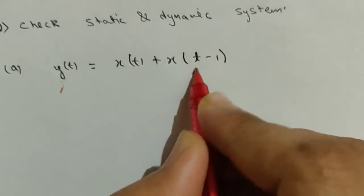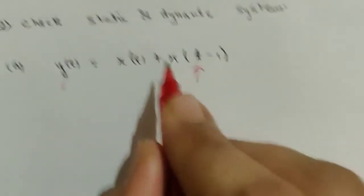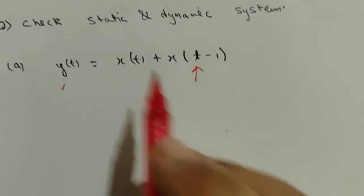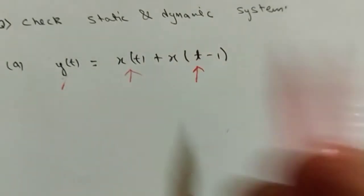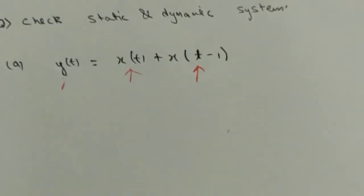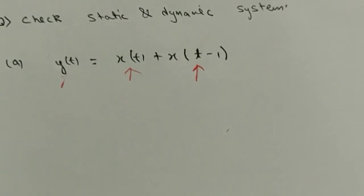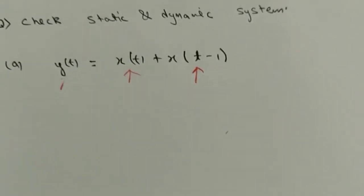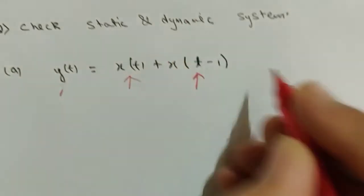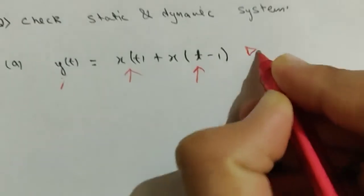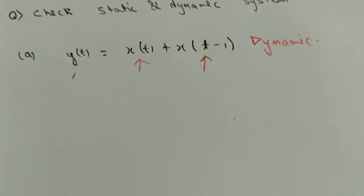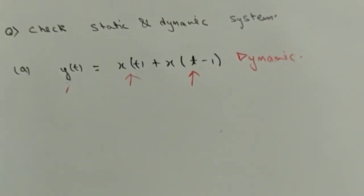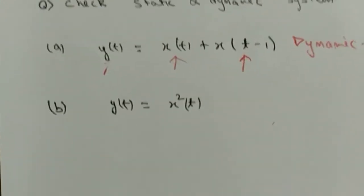Looking at the system y(t) = x(t) + x(t-1): the component x(t-1) is dependent on past values and x(t) is dependent on present values. According to the definition, if the system depends on past or future values at any instant of time, the system is dynamic. So this system is dynamic.